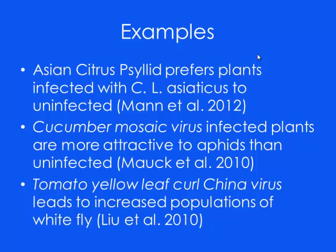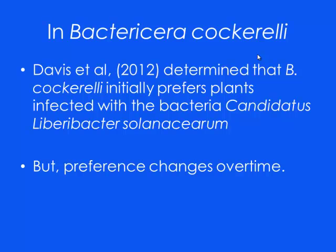This happens for ecological reasons — the pathogen is making the insect do things that allow it to transmit itself better. The pathogen is looking after its own interests. Seth Davis looked at this phenomenon in the potato psyllid. What he found is that if you give the insect the choice of infected and uninfected plants, early on they're going to go to the infected plants. But over time, as the plant gets a little sicker, the preference changes and the insects move. What this does is it means they're going to spread the pathogen through the fields — they pick it up on this early plant and then move off to the unaffected plants carrying the pathogen.